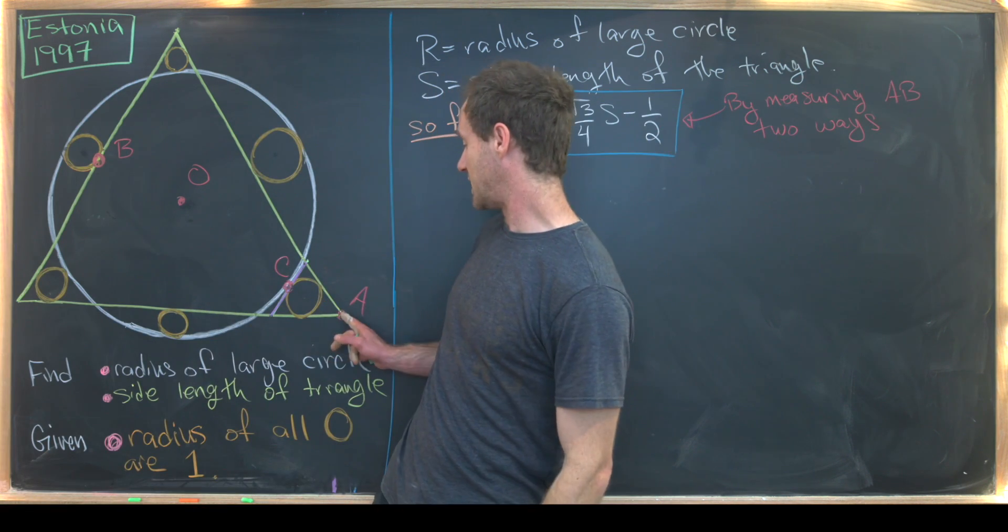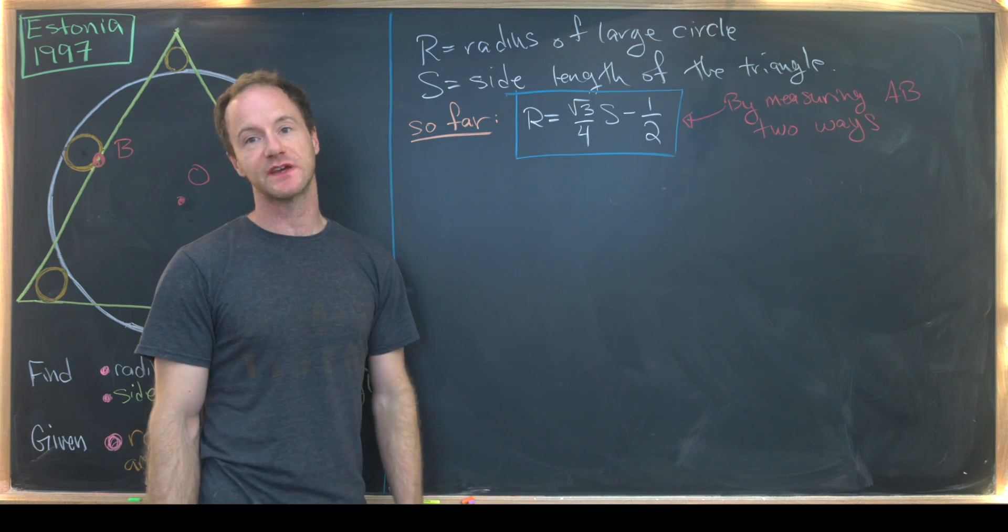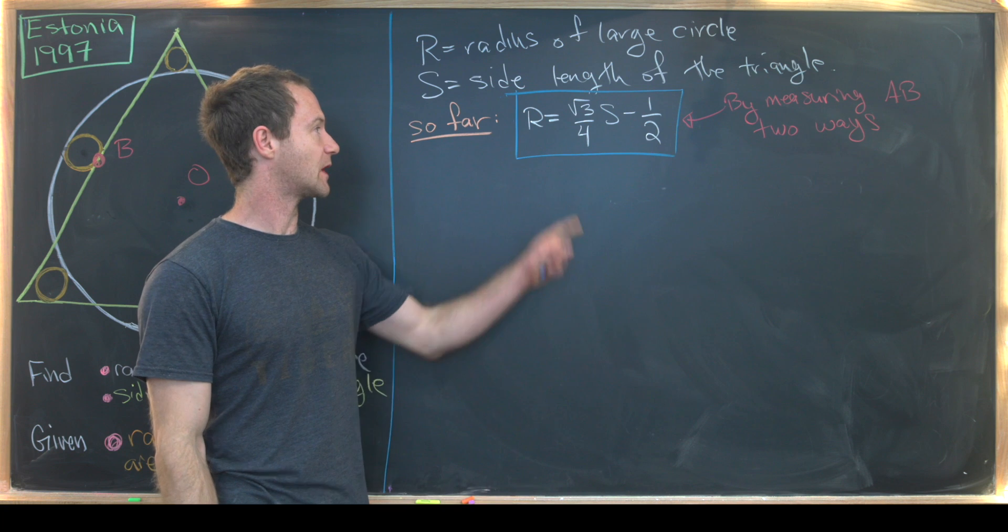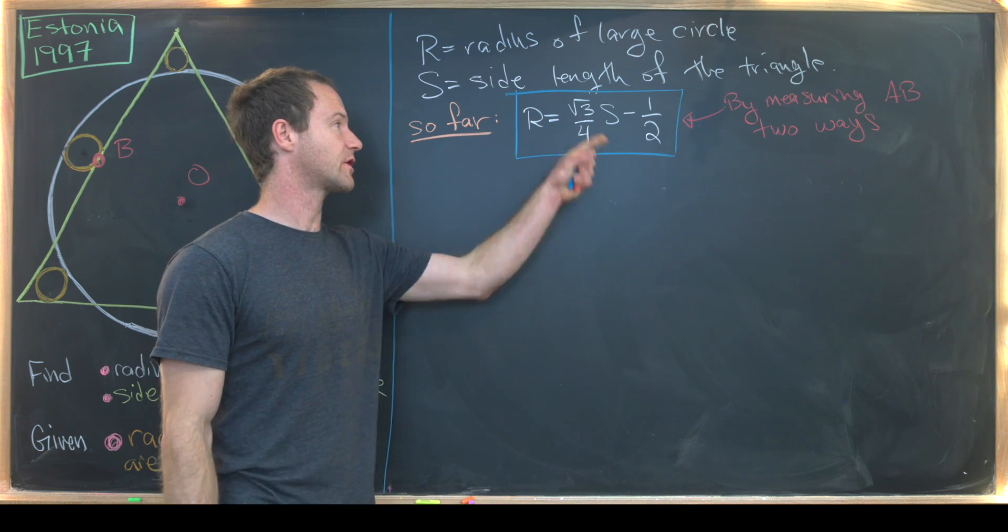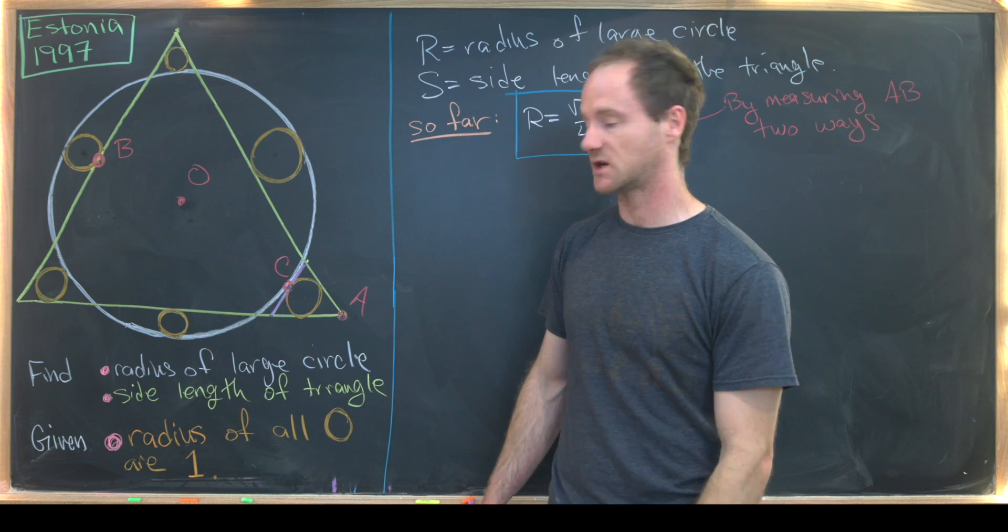So let's keep that linear relationship. And then we'll find another linear relationship between S and R. So by measuring AB, the distance from this point to this point two ways, we determined a linear relationship between R and S. So I've recombined it a little bit and we found that R is equal to root three over four S minus half. Now we're ready to finish this off.